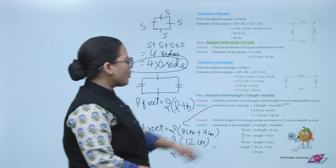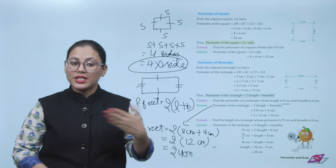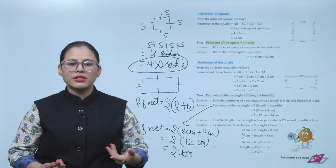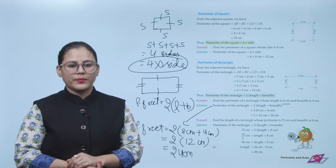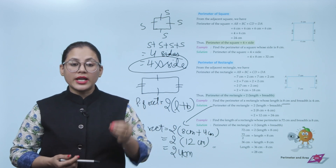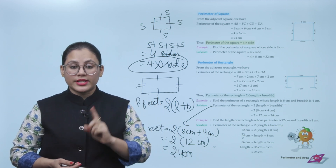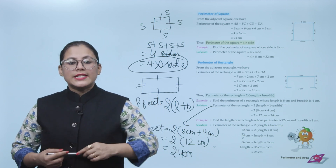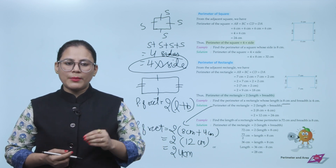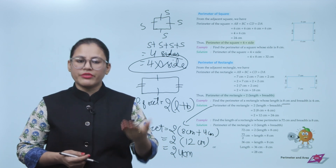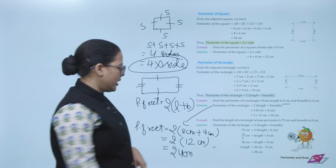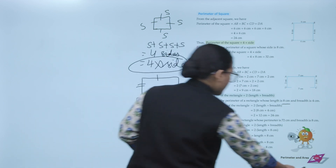Whatever unit is given, use the same unit in your answer — if meter, then meter; if centimeter, then centimeter; if millimeter, then millimeter. Next example: Find the length of a rectangle whose perimeter is 72 centimeters and breadth is 8 centimeters. Here, perimeter and breadth are given; you need to find the length.